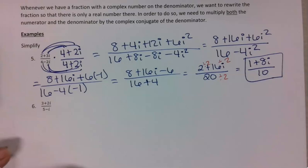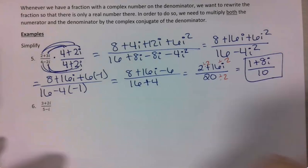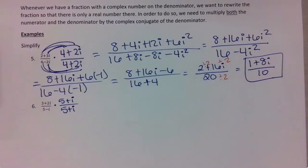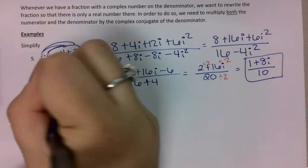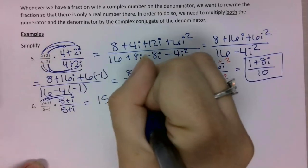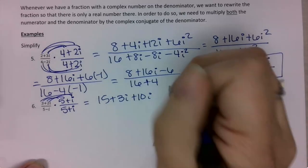Number 6 is the same. This time I'm going to take 5 minus i and multiply by 5 plus i for my numerator and denominator. Distributing: 3 times 5 is 15, 3 times i is 3i, 2i times 5 is 10i, and 2i times i is 2i squared.